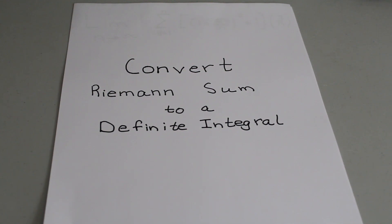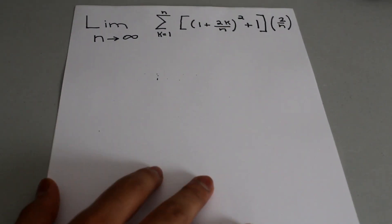In this video we're going to learn how to convert a Riemann sum to a definite integral. So let's take the Riemann sum,